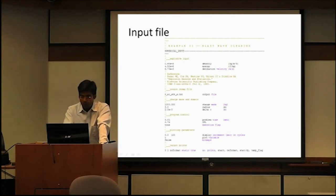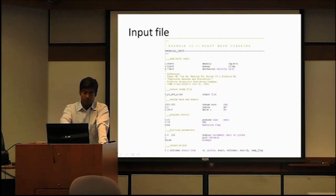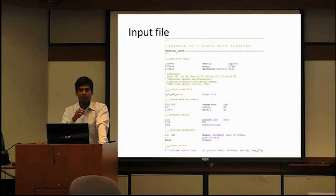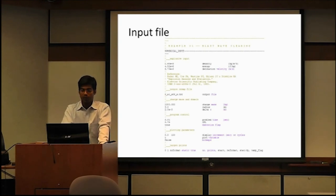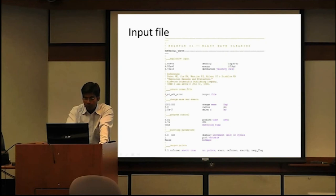In the first line you provide the density of the charge, which is a default value. Most of the things already have information given — you only need to change a few things: the definition of where your structure is, what your charge distance is, and what mesh size you'd like to use. For the explosive definition, you have density (1.6), then specific energy standard to TNT, and then the detonation velocity — these are standard values for all your analyses.